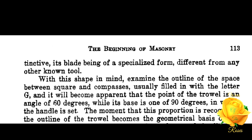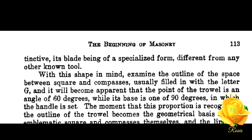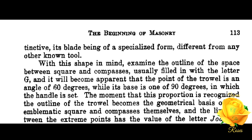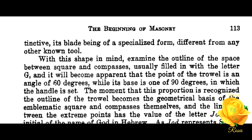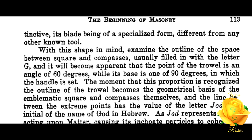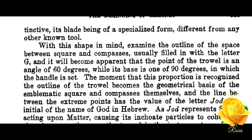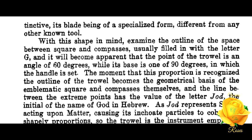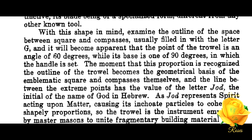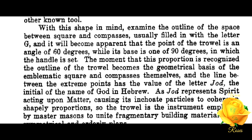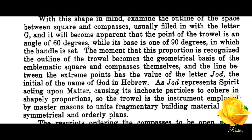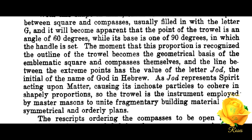The shape of the trowel, however, is distinctive — its blade being of specialized form different from any other known tool. With this shape in mind, examine the outline of the space between square and compass usually filled in with the letter G, and it will become apparent that the point of the trowel is an angle of 60 degrees, while its base is one of 90 degrees, in which the handle is set.